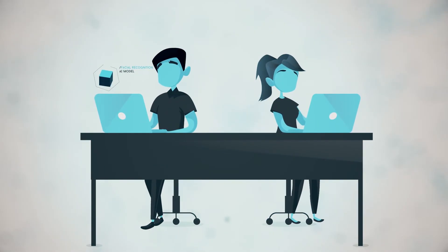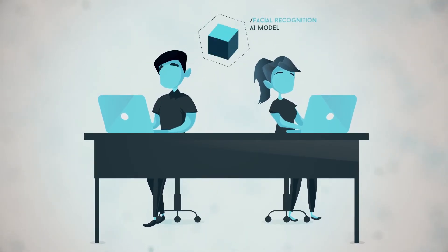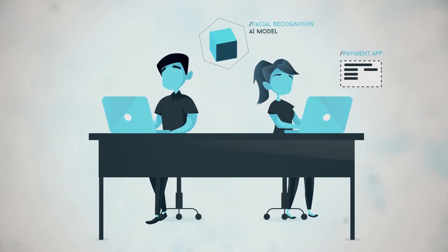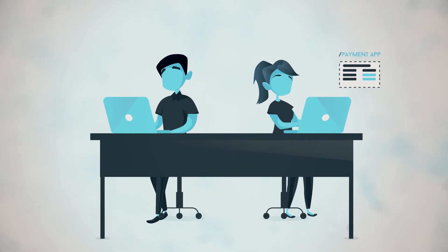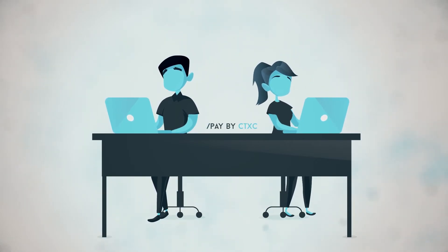Let's say Johnny has trained an AI model for facial recognition. He submits it to the Cortex storage layer. Meanwhile, Amy, who is writing a decentralized payment app, can use this model in her app to verify users. And she pays Johnny in CTXC each time the model is used.